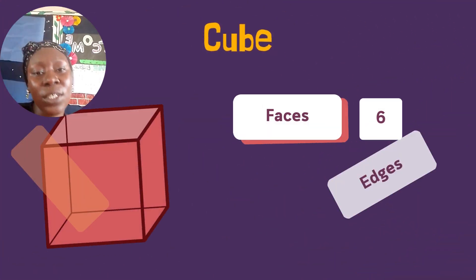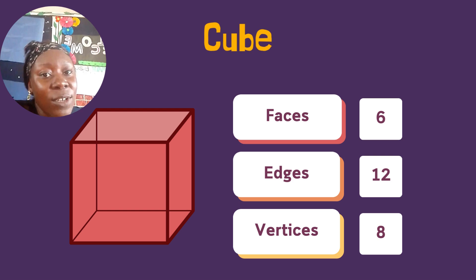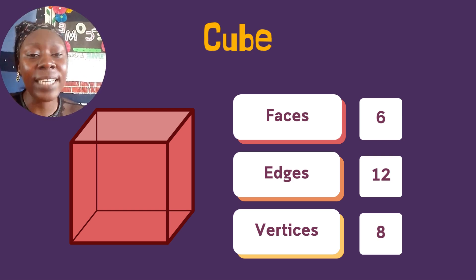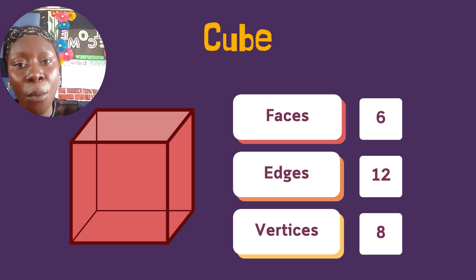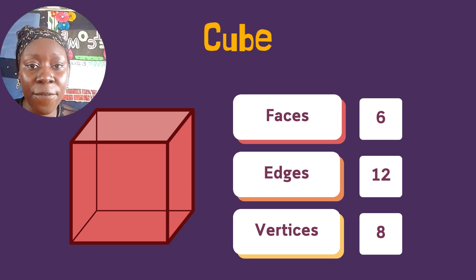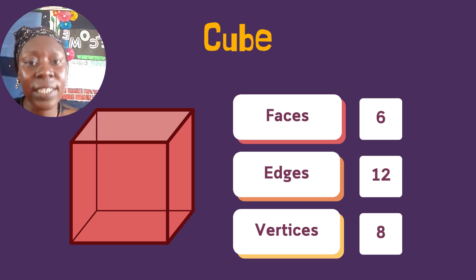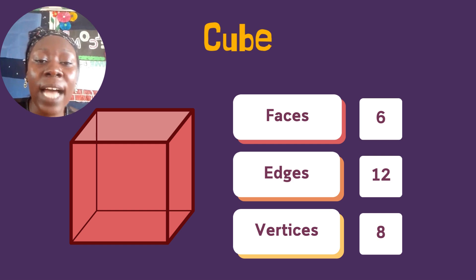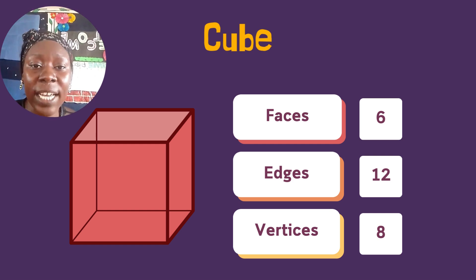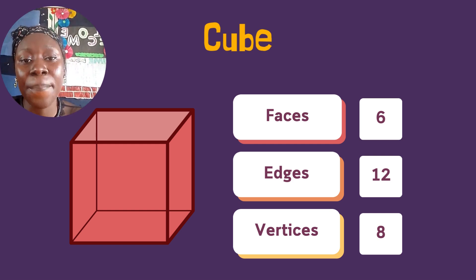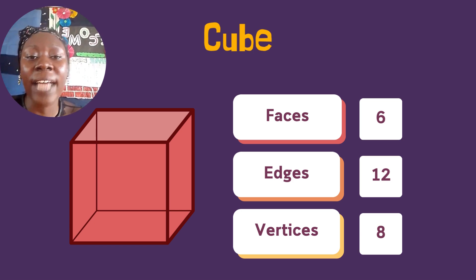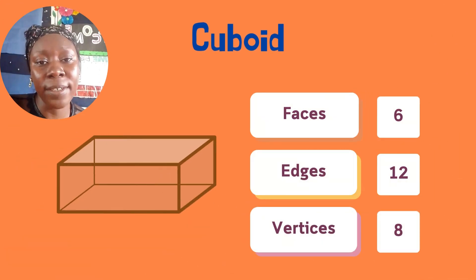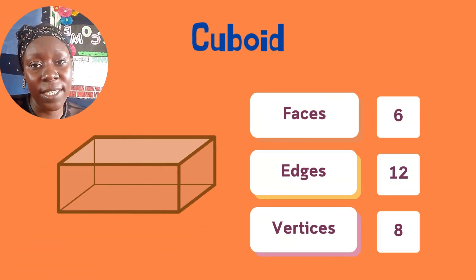Let's start with the cube. A cube has six faces — one, two, three, four, five, six. It has 12 edges and eight vertices. A cuboid also has six faces, 12 edges, and eight vertices.